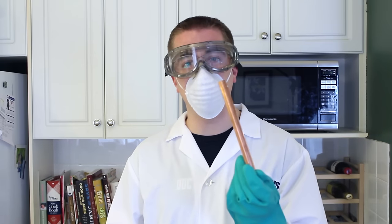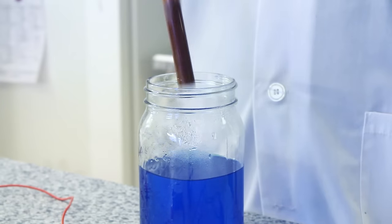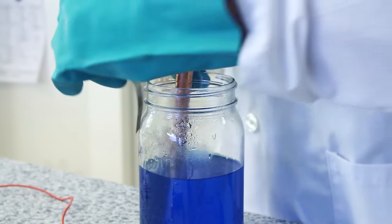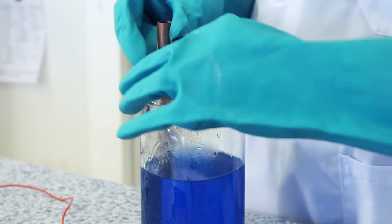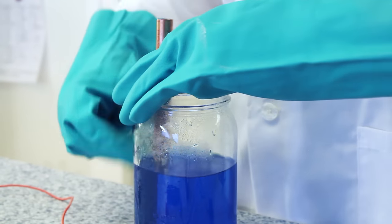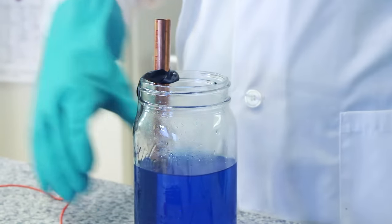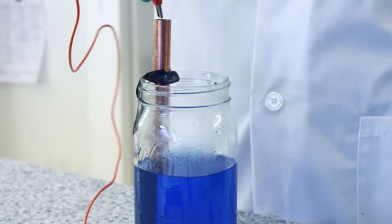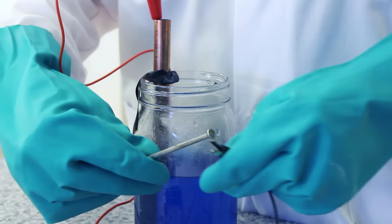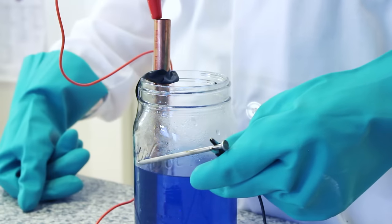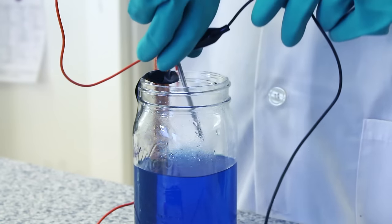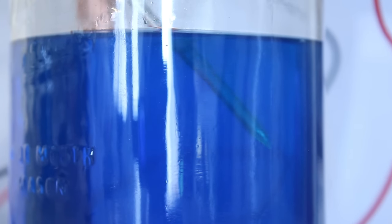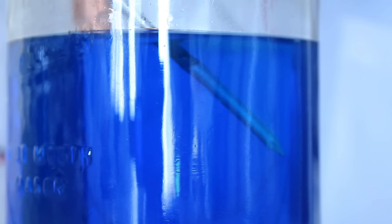The last step in our experiment is to take the copper pipe and place it into the mason jar. Tape it to the side of the jar. Take the alligator clip touching the positive side of your battery and attach it to the copper pipe. Then take your nail or piece of metal you want to coat and connect the negative alligator clip to the nail.